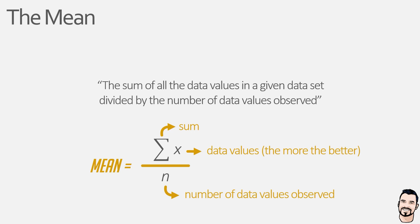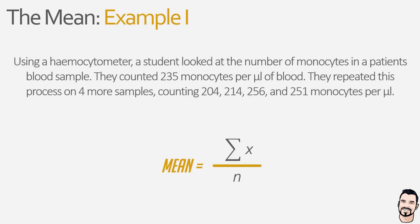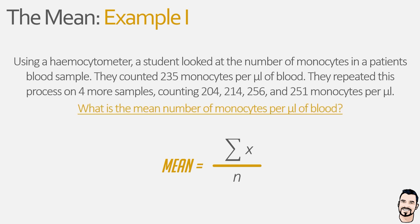To help make sense of this equation we are going to calculate the mean value of two example data sets. In our first example we have a student who is counting the number of monocytes in a patient's blood sample using a microscope and haemocytometer. During their first count they note 235 monocytes per microlitre of blood. To increase accuracy they perform repeat counts on different blood samples from the same patient, noting 204, 214, 256 and 251 monocytes per microlitre. The student wants to know what is the mean number of monocytes per microlitre for this patient.